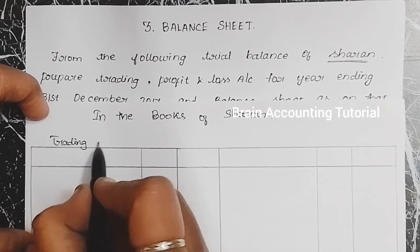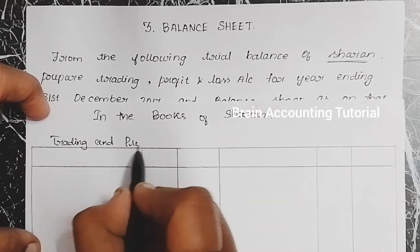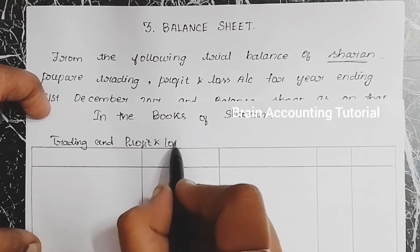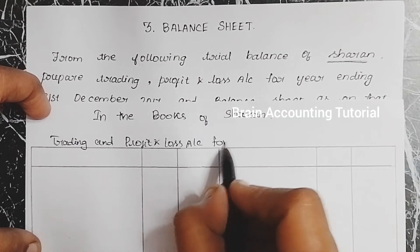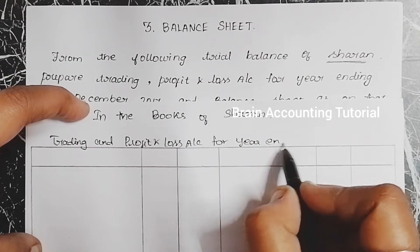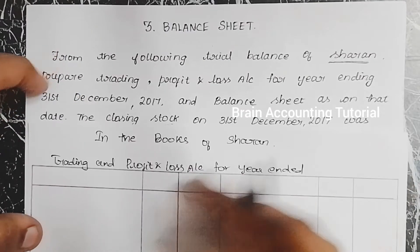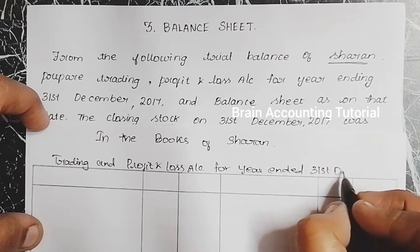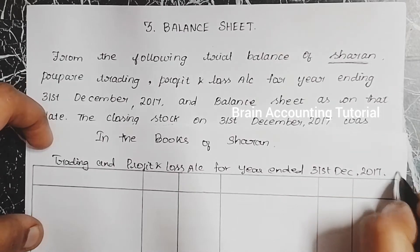Trading and Profit and Loss Account for the year ended 31st December 2017. We have the credit side and debit side with particulars and amounts.